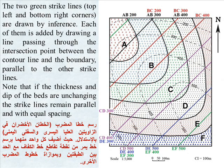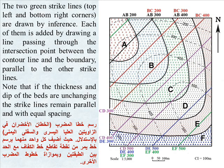The two green strike lines, at the top left and bottom right corners, are drawn by inference. Each is added by drawing a line passing through the intersection between the contour line and the boundary, parallel to the other strike lines. Note that if the thickness and depth of the beds are unchanging, the strike lines remain parallel and with equal spacing.